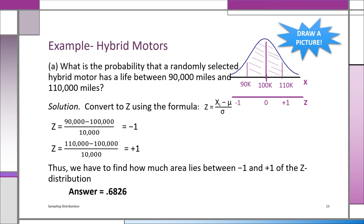Always draw the picture. We turn 90,000 into a Z score and 110,000 into a Z score. Z for 90,000 is (90,000 − 100,000)/10,000 = −1. Z for 110,000 is (110,000 − 100,000)/10,000 = +1. So you're finding the area between minus one and plus one. The area on each side is 0.3413, and the total answer is 0.6826.